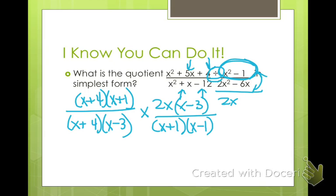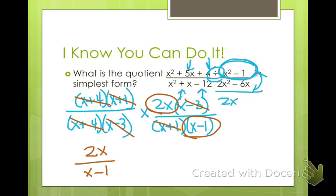Okay, so now I can go through and look and see, do I have any factors that I can get rid of? Well, I have an x - 3 here and here. I have an x + 1 here and here. I have an x + 4 here and here. So what am I left with? I've got 2x and x - 1, so 2x over x - 1. I can't do anything else with that. Okay, so I've done that part. Now I need to find my restrictions.